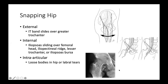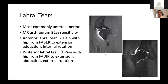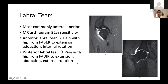A labral tear is a tear in the horseshoe-shaped structure inside the hip joint. The most common area is anterosuperior. Patients have pain, locking, clicking, and catching with hip movement. An MR arthrogram can show the tear and is 92% sensitive. A diagnostic maneuver involves moving from FABER — flexion, abduction, external rotation — to extension, adduction, and internal rotation, which is more indicative of an anterior tear, versus moving from FADIR — flexion, adduction, internal rotation — to extension, abduction, and external rotation, which is more indicative of a posterior tear.